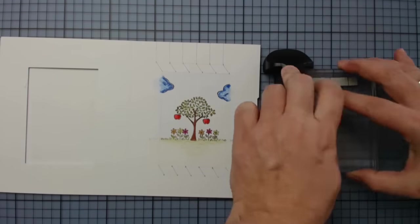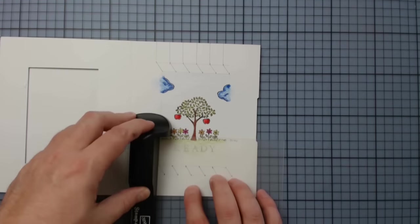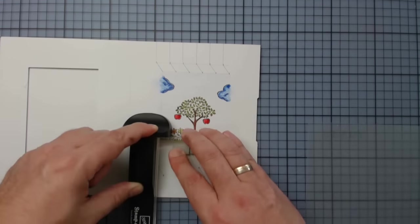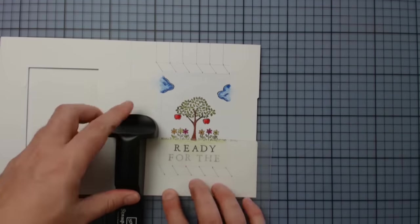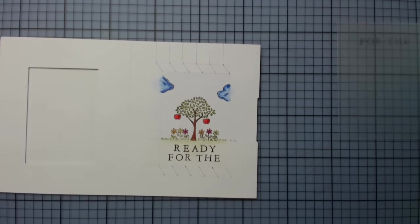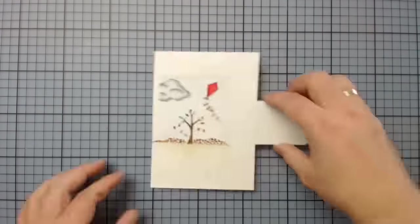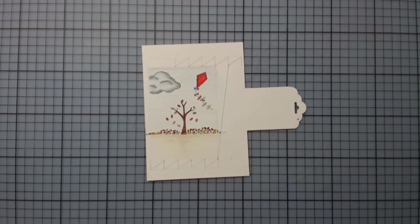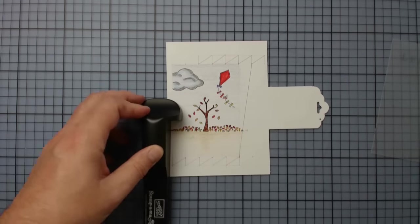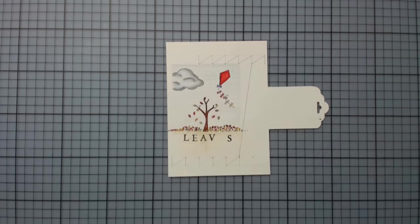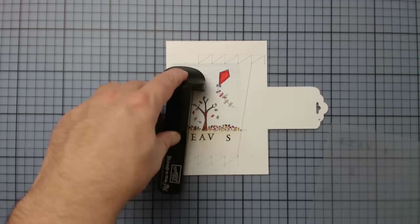For the quote I'm using the stamp positioner again, together with a piece of acetate. By this I'm able to see the word on the card first, before I'm really stamping it. And as we currently have a really wonderful and sunny autumn here in Germany, it's very easy to be ready for the leaves to fall.